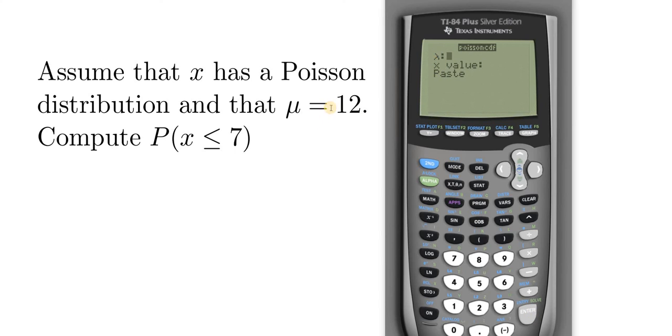Alright, lambda is the same thing as mu, so it's just going to be the mean, which is 12. The X value comes from here, that's going to be 7.